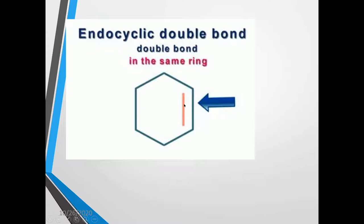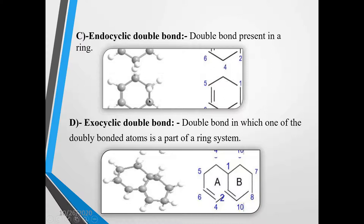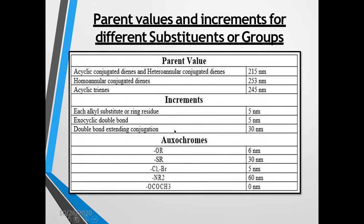The double bond present inside the ring is called as endocyclic double bond. The double bond which is outside the ring but is a part of the ring structure is called as exocyclic double bond. You can see from this figure also — the endocyclic double bond is present inside the ring and the exocyclic double bond is part of the ring system but outside the ring structure. Now we shall see the values assigned to each basic structure and to the different substituents.